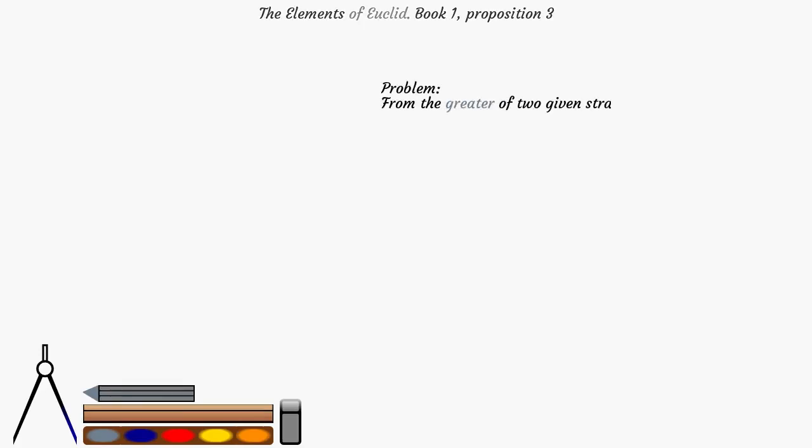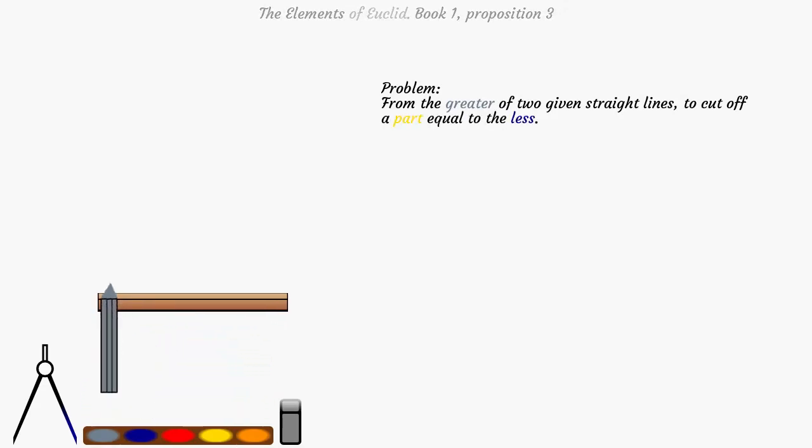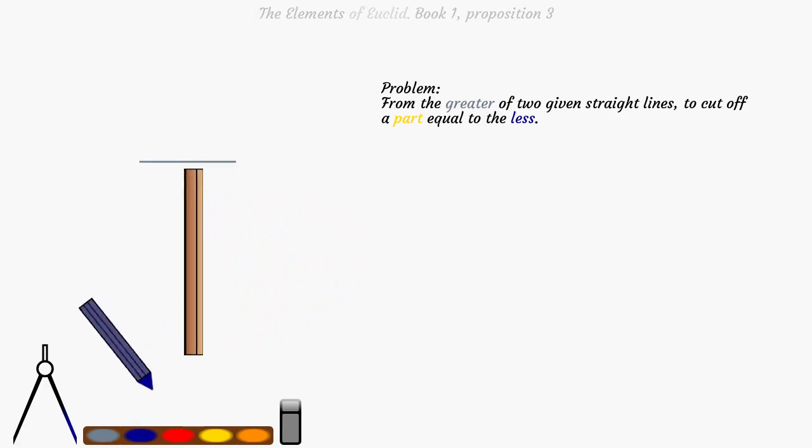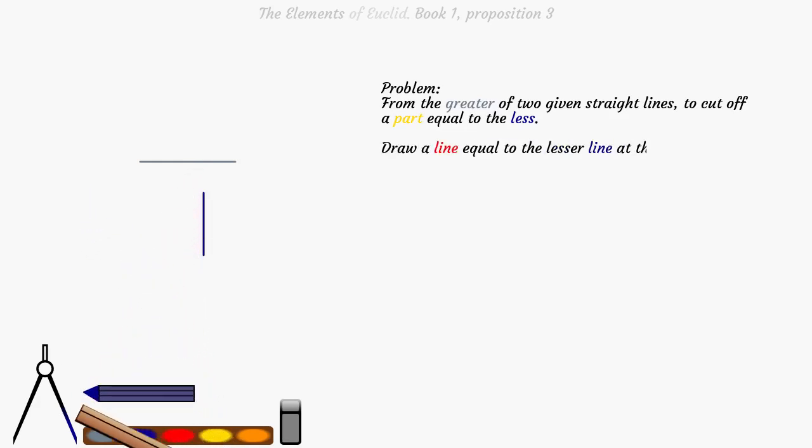From the greater of two given straight lines, to cut off a part equal to the less. Draw a line equal to the lesser line at the end of the greater line, Proposition 2.